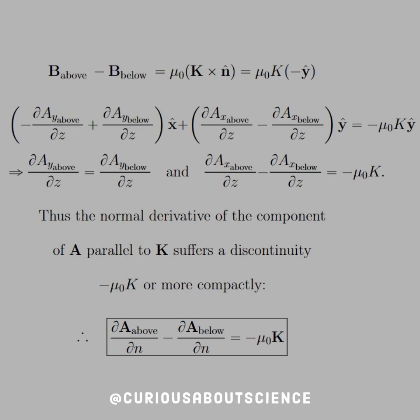We know that B_above minus B_below equals μ₀(K × n̂). In this setup, K × n̂ would be magnitude K times the negative ŷ direction.